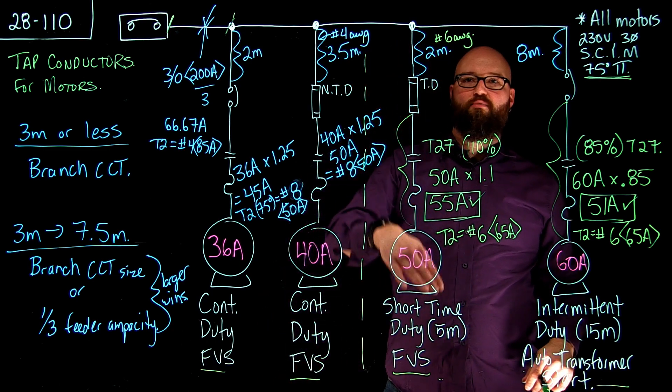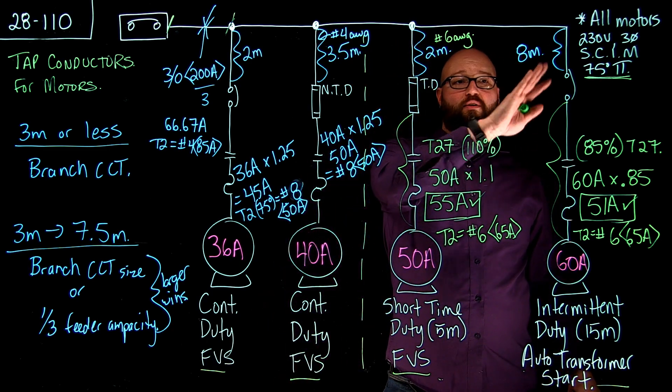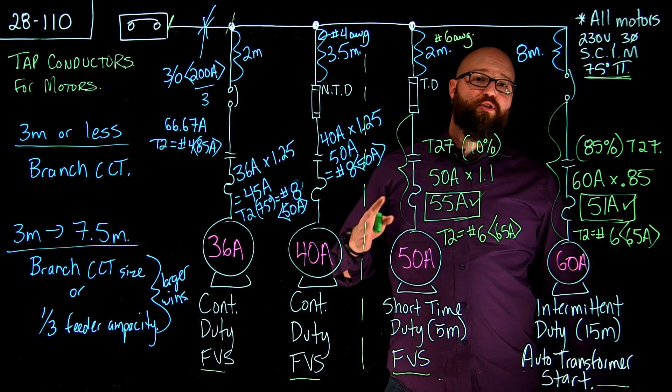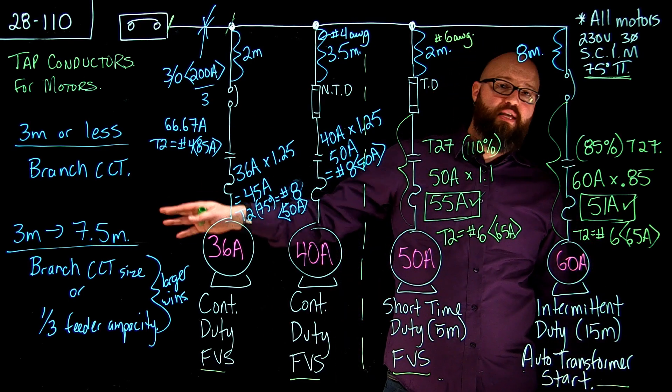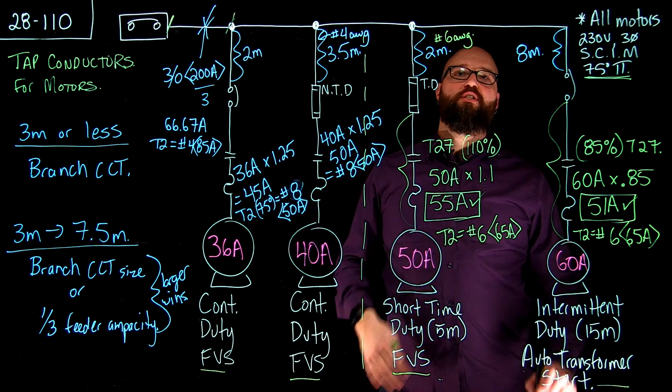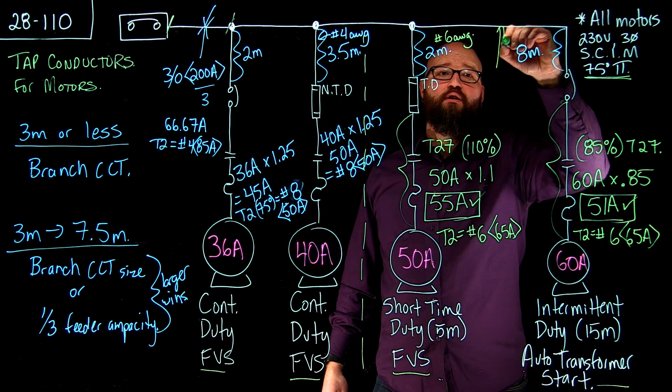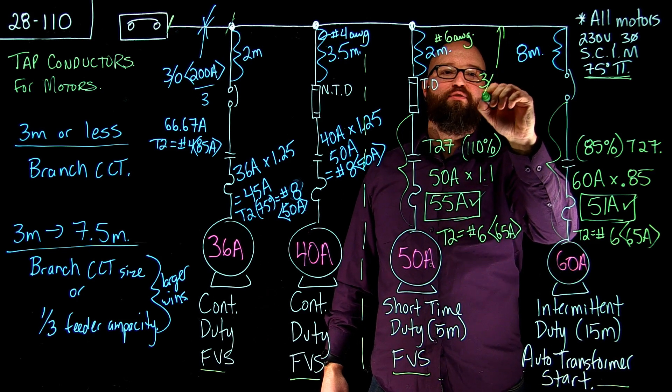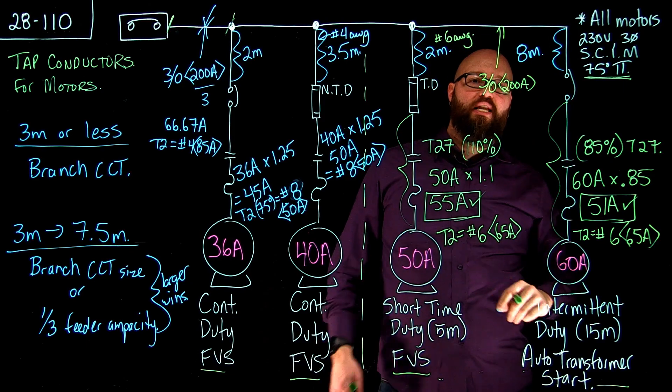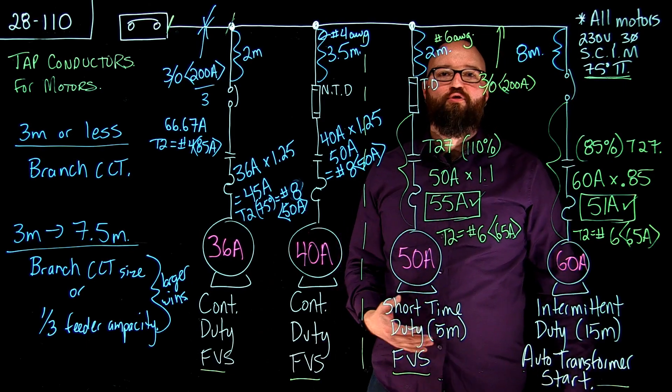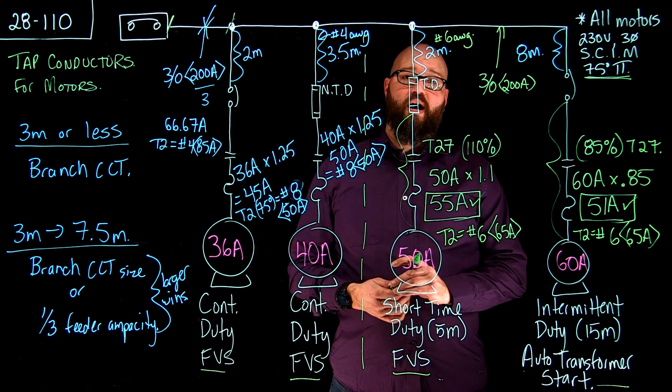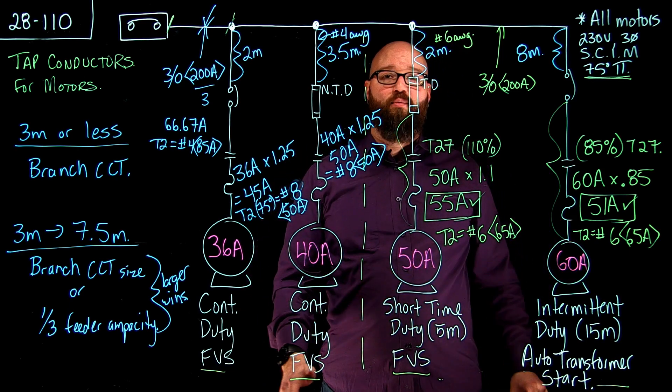From here to here I'm okay to get away with a number 6 from here to here. I'm okay to get away with a number 6 as well. Now we're 8 meters on our tap on this particular installation which means that I can no longer apply the tap conductors from 28110. I can't apply those rules. I would actually see this conductor would be equal to I would have a 3-0 good for 200 amps because I exceed that 7.5 meters. I'm not allowed to apply those exceptions in that case. So hopefully this has helped and we'll see you next time. Thanks for watching.